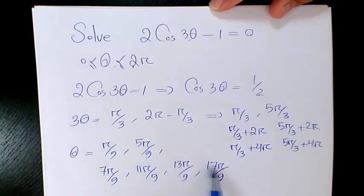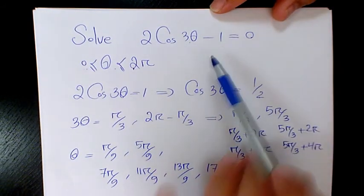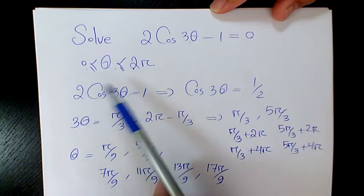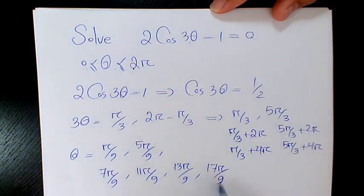Since it is 3 theta we have 6 answers. If it was just theta we would have only 2 answers for 0 to 2π. Now since it's 3 theta it's going to be 6 answers.